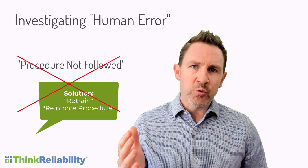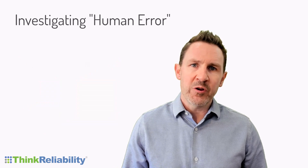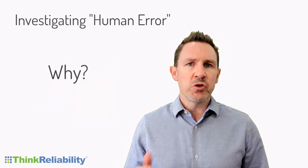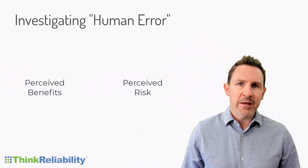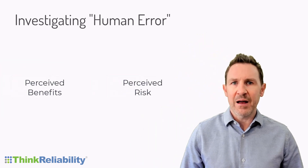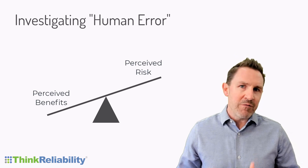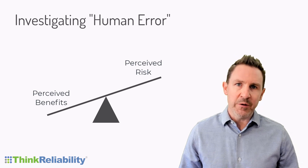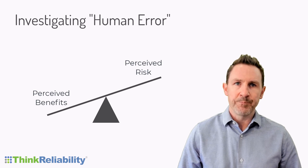If you really want to address this and drive better results, you've got to get to the underlying causes. When someone chooses to deviate, it's because the perceived benefits outweigh the perceived risk. And if we can reveal the specific causes around each of those elements, that is going to give you actual things to work on.